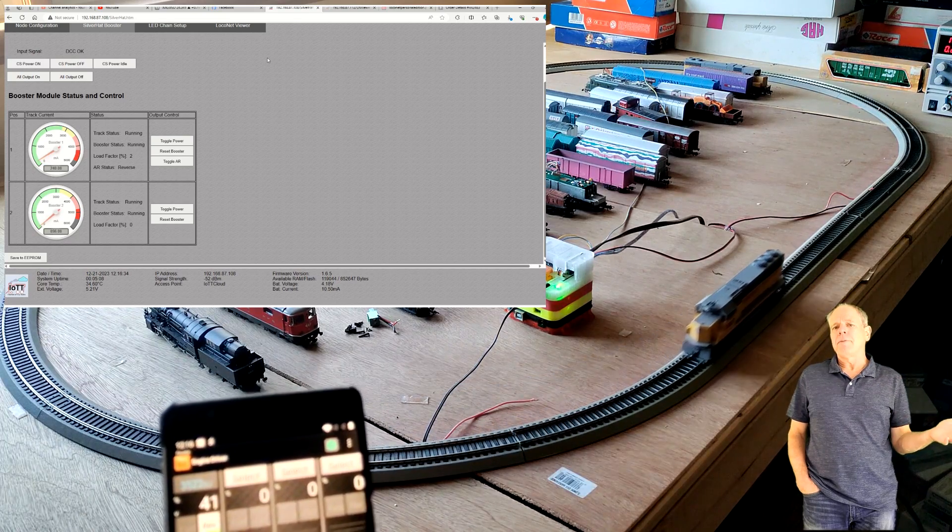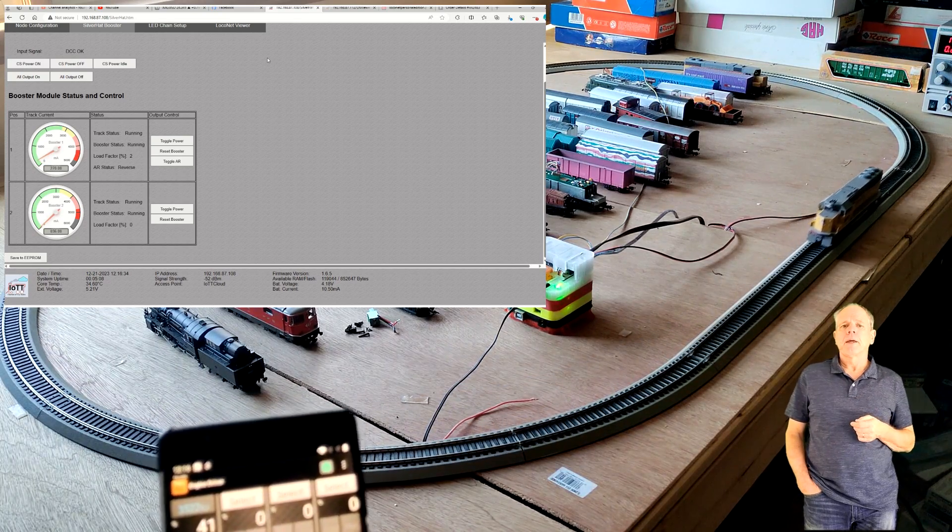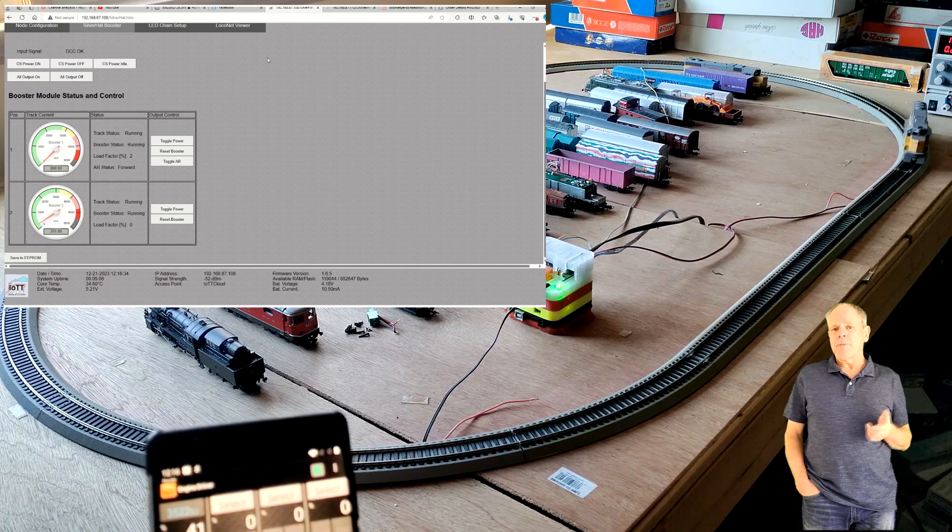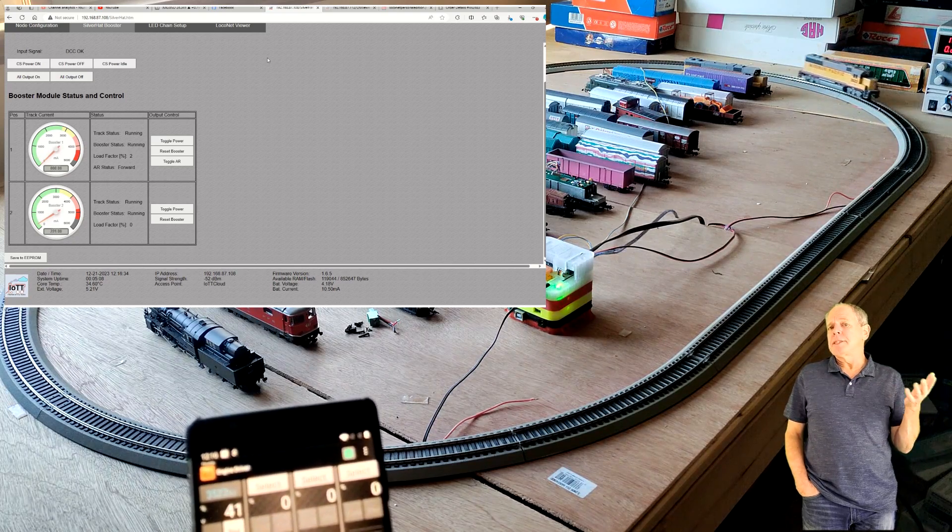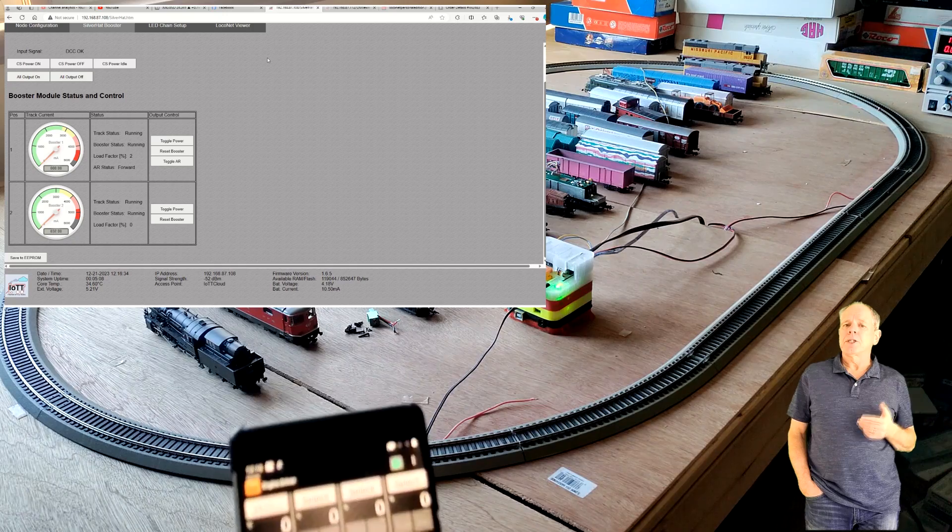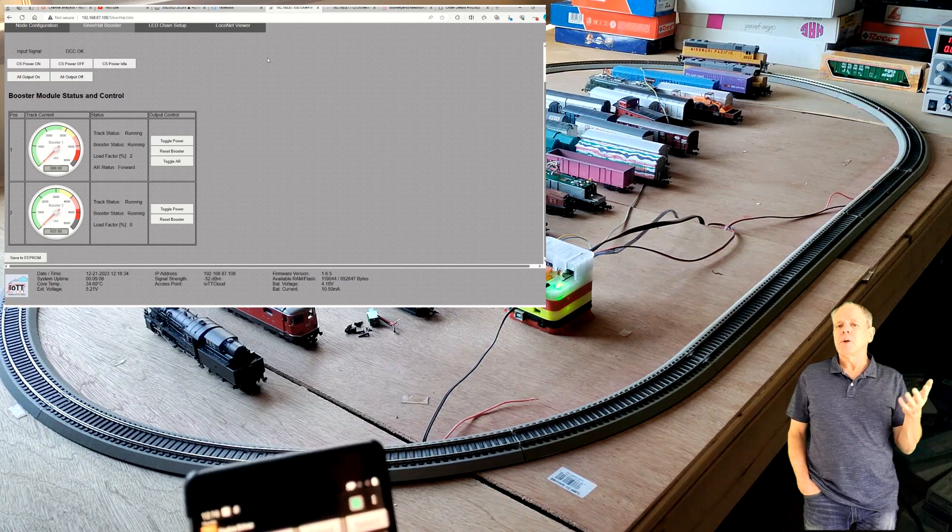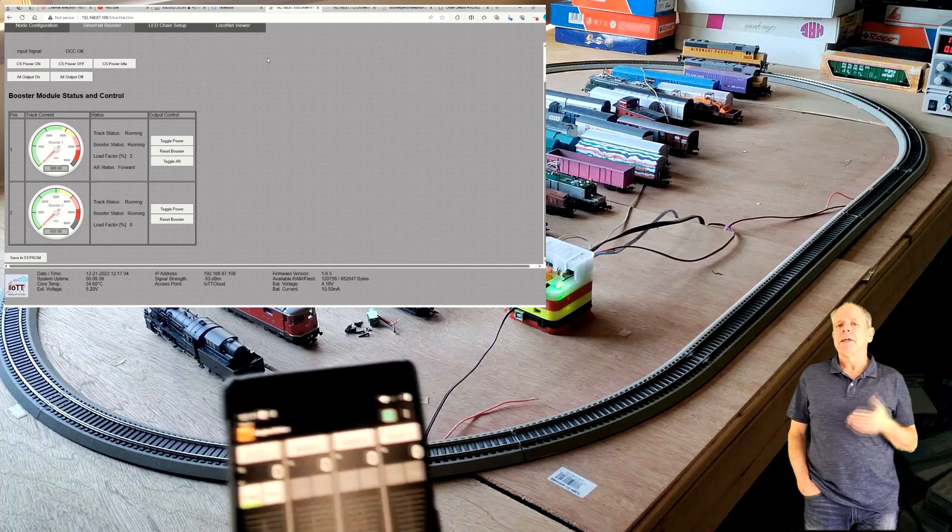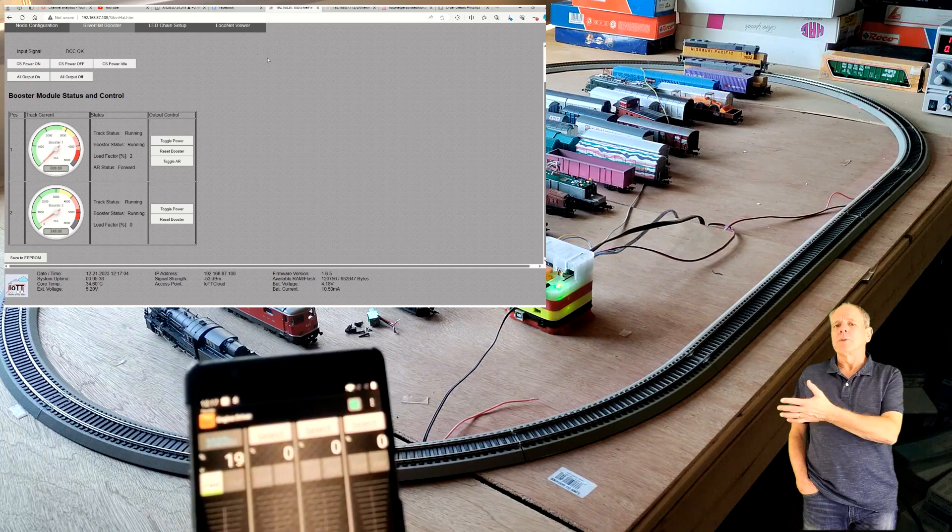When it crosses the second gap, the same happens and we see also that the polarity of the middle section changes as the wheels of the locomotive create a short circuit when hitting the rails with opposite polarity.